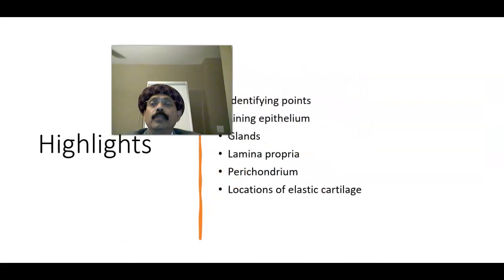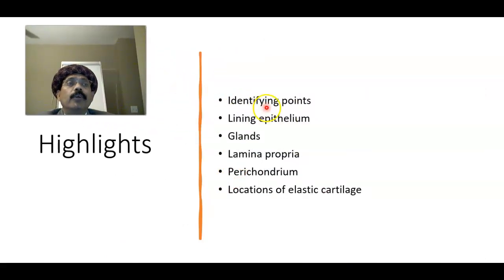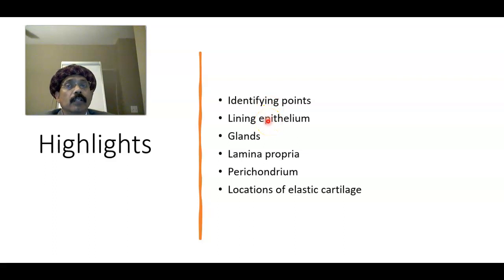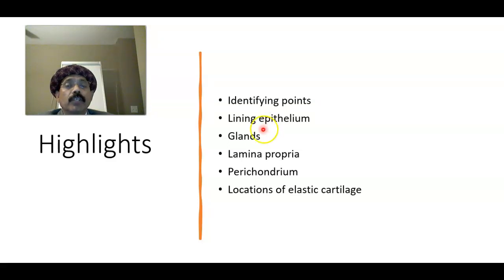So what are the highlights of this slide? The identifying point: the central core is a plate of elastic cartilage covered on both surfaces by the epithelium and lamina propria. The epithelium on the lingual surface is non-keratinized stratified squamous epithelium. The lower half of the laryngeal surface is the pseudostratified ciliated columnar epithelium. The upper half lining epithelium is stratified squamous non-keratinized epithelium.